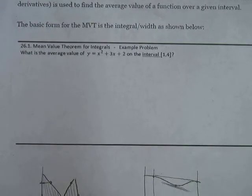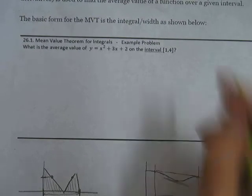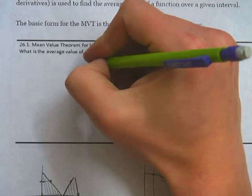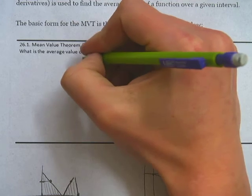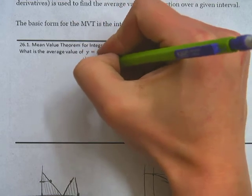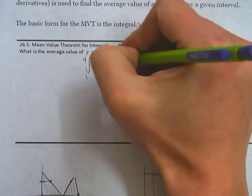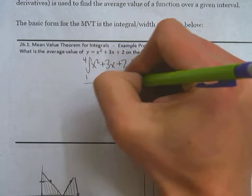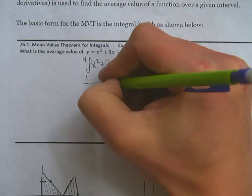So let's actually do one. We have a problem up here. What is the average value of this function on the interval 1 to 4? Well, here's what we do. To find the area, we integrate from 1 to 4 of x squared plus 3x plus 2 dx. And then what we're going to do is divide this by the width of the interval, which is 4 minus 1, which is 3.